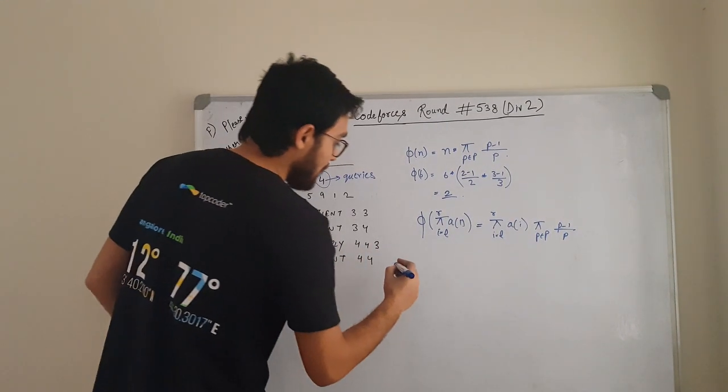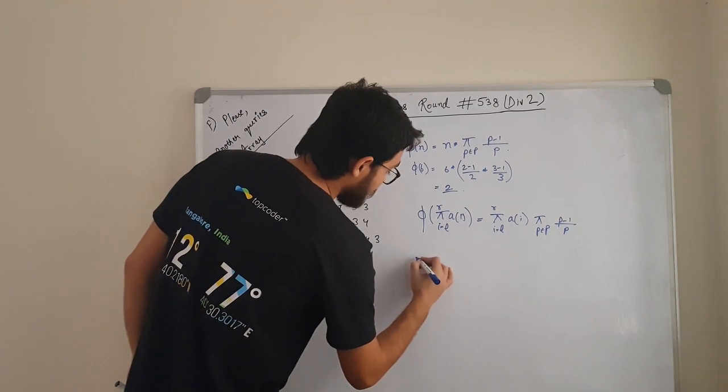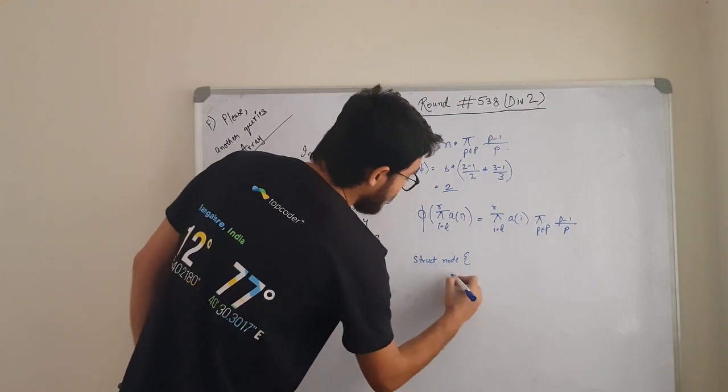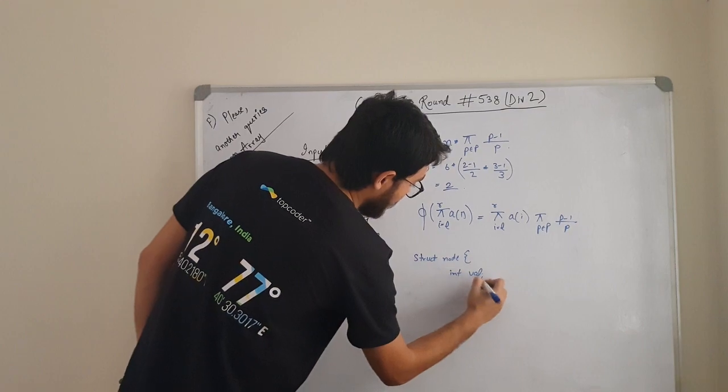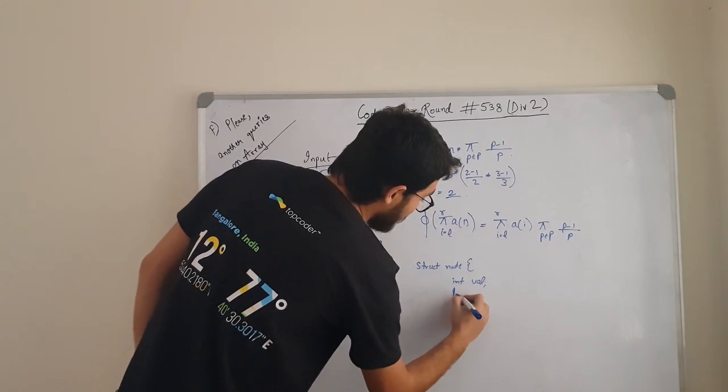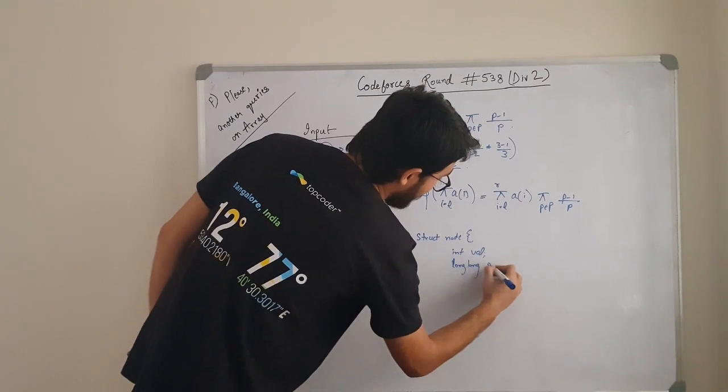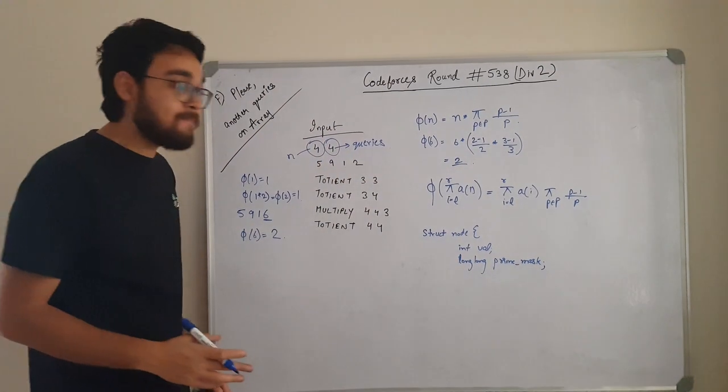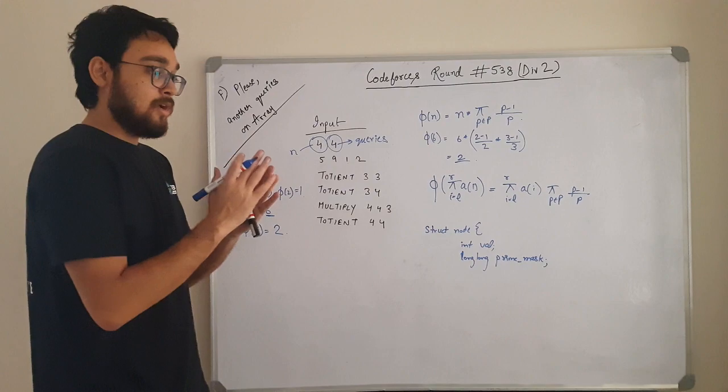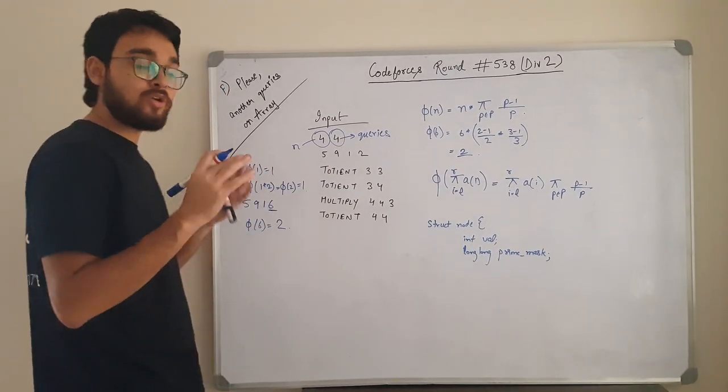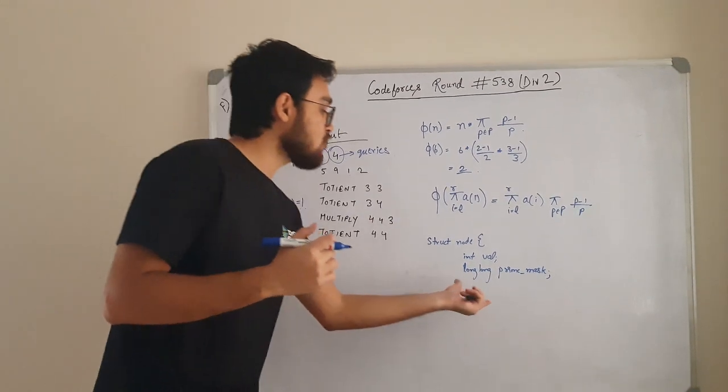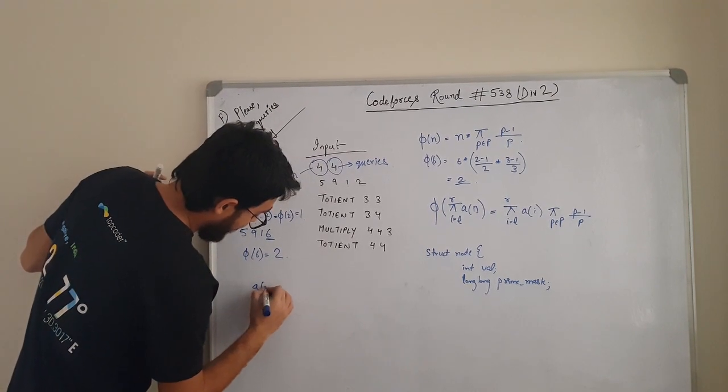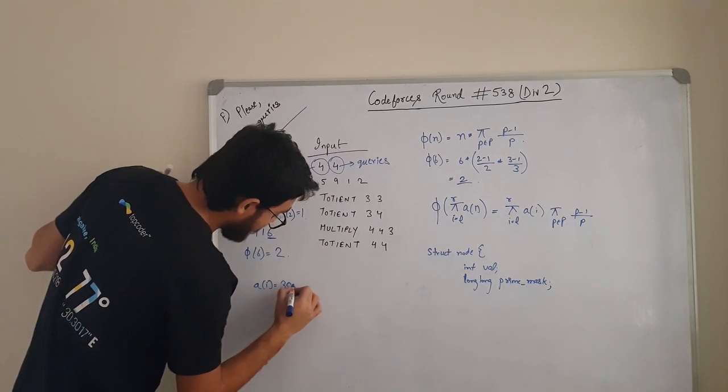In one node, we will have a value. We want to have value in it and we want to have long long prime_mask. Now, what is this long long prime_mask? This prime mask is basically a bit mask which is storing the information about what all primes will be present. How can I store this in a long long?